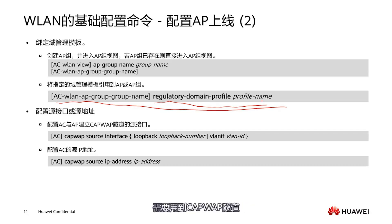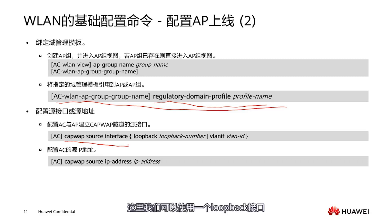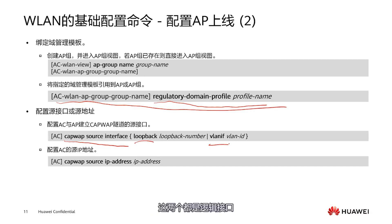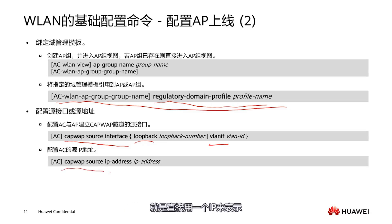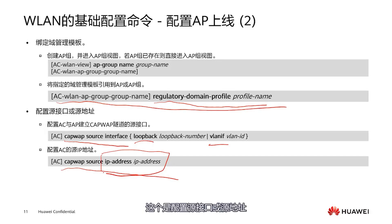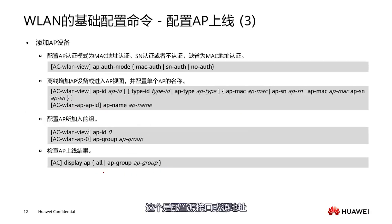Next, we need to configure the source interface, because when using AC with AP we need to use the CAPWAP tunnel. So here we configure the CAPWAP source interface. We can use a loopback interface or a VLANIF interface, both of which are logical interfaces. Alternatively, we can directly set the source address of the AC using an IP address. This is about configuring the source interface and source address.